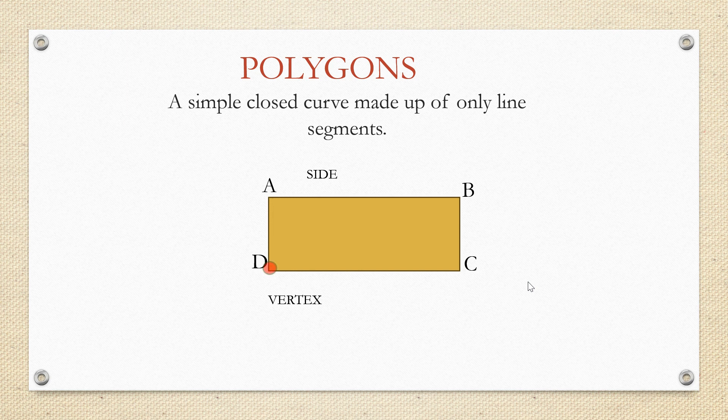Here A, B, C, D are vertices. AB is a side. Similarly BC, CD and DA are sides of this polygon.